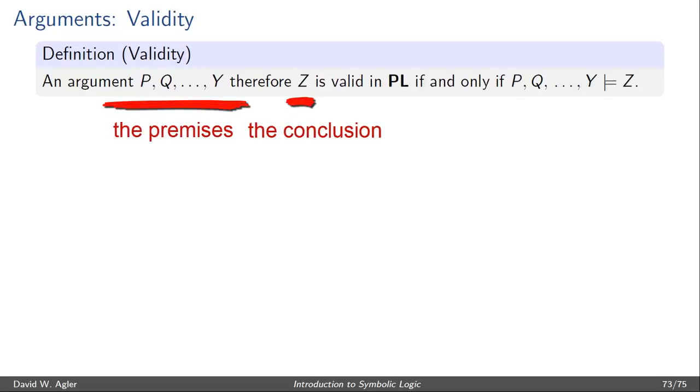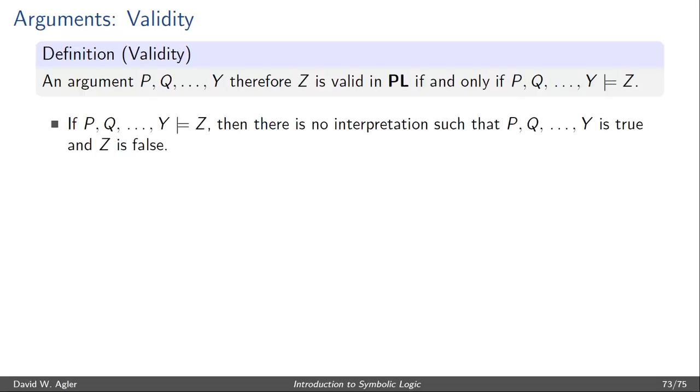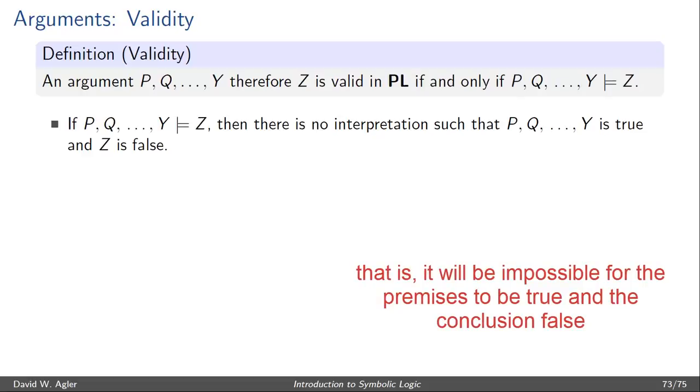is valid in the language of propositional logic if and only if P, Q, and Y entail Z. If P, Q, and Y entail Z, what this expresses is that there's no interpretation such that would make P, Q, and Y true and Z false.